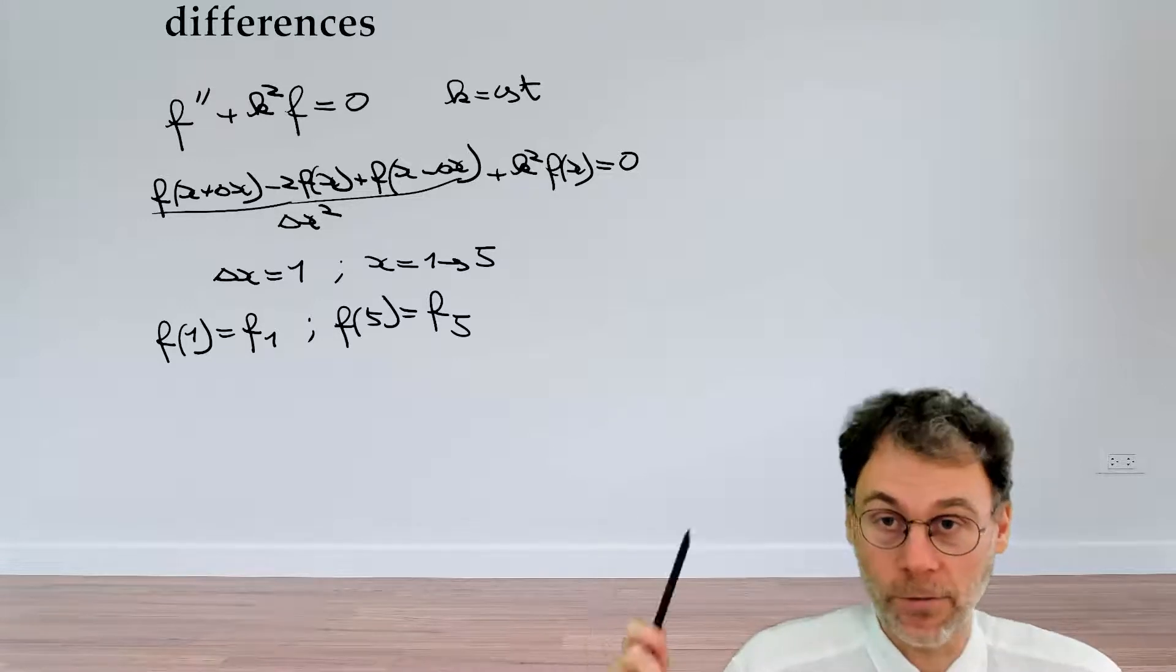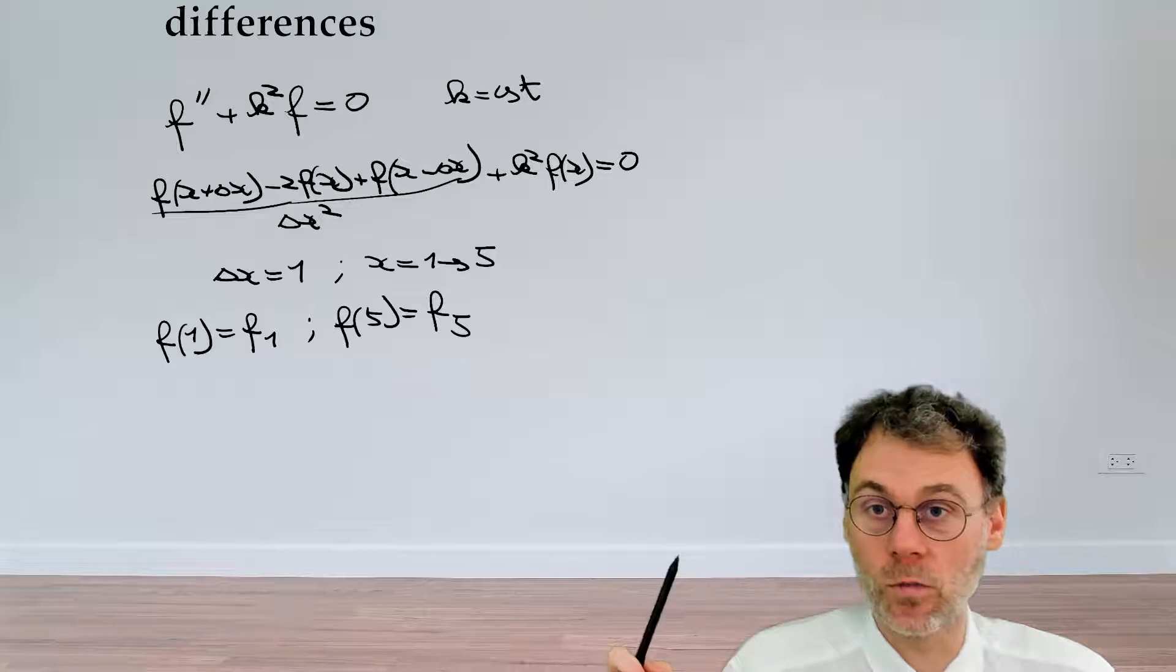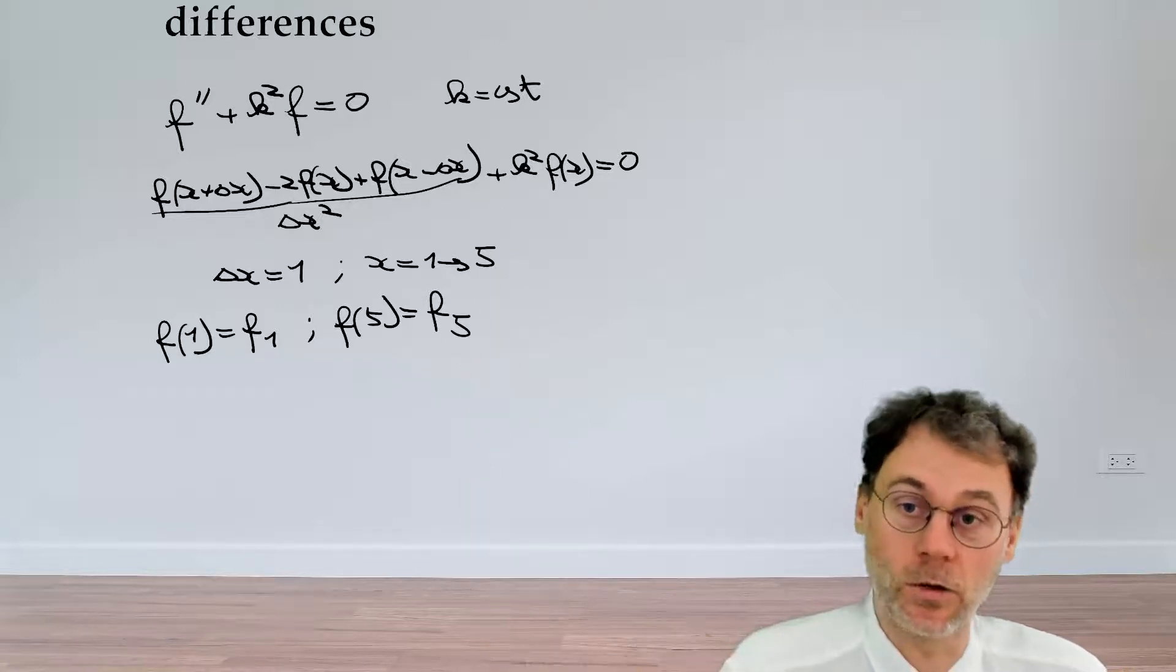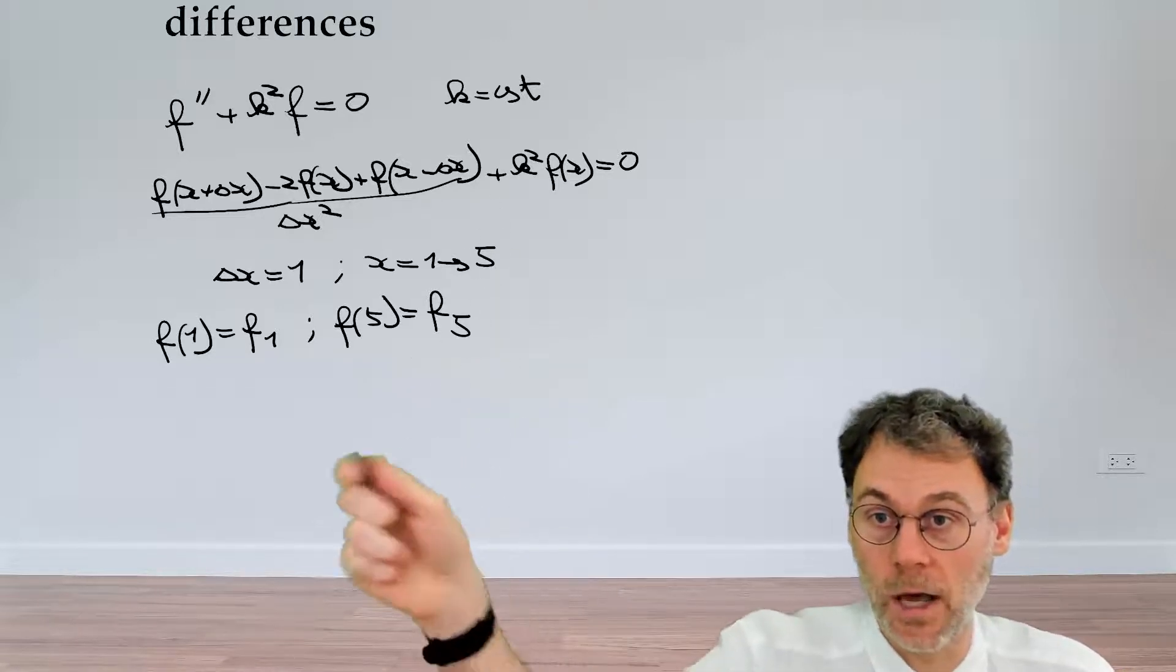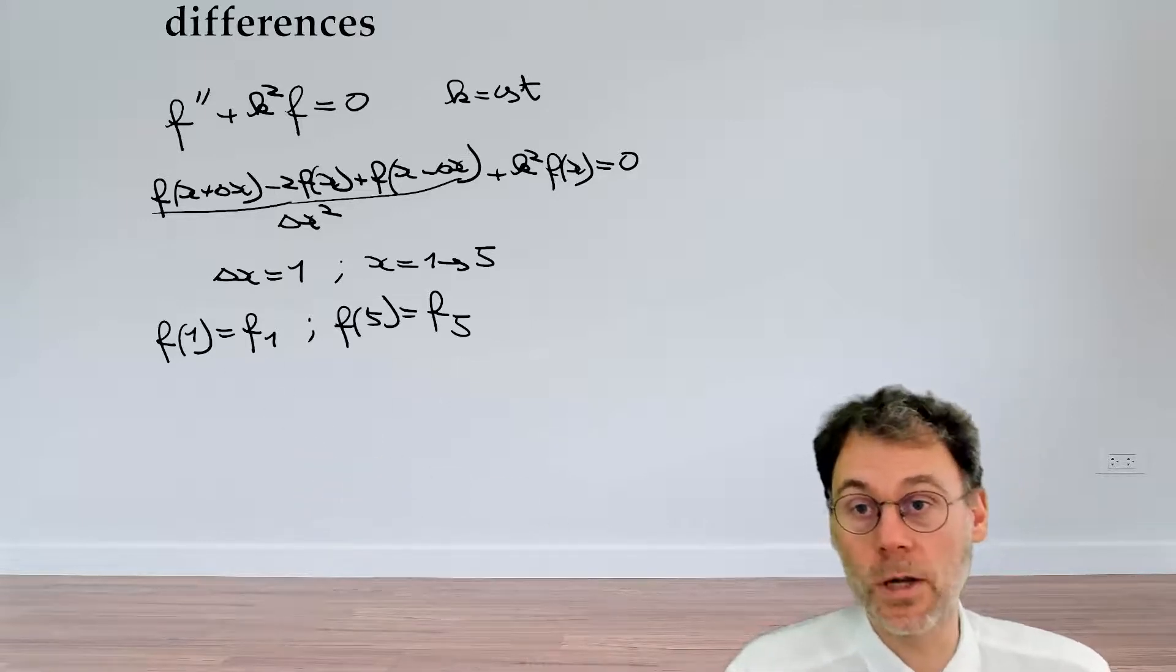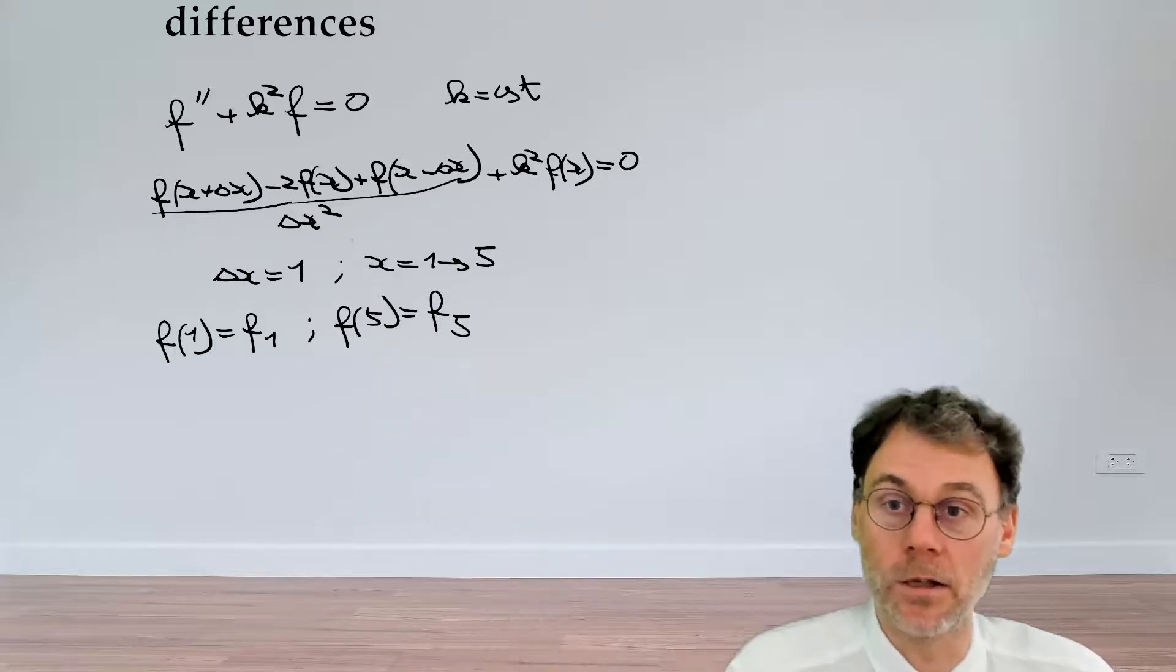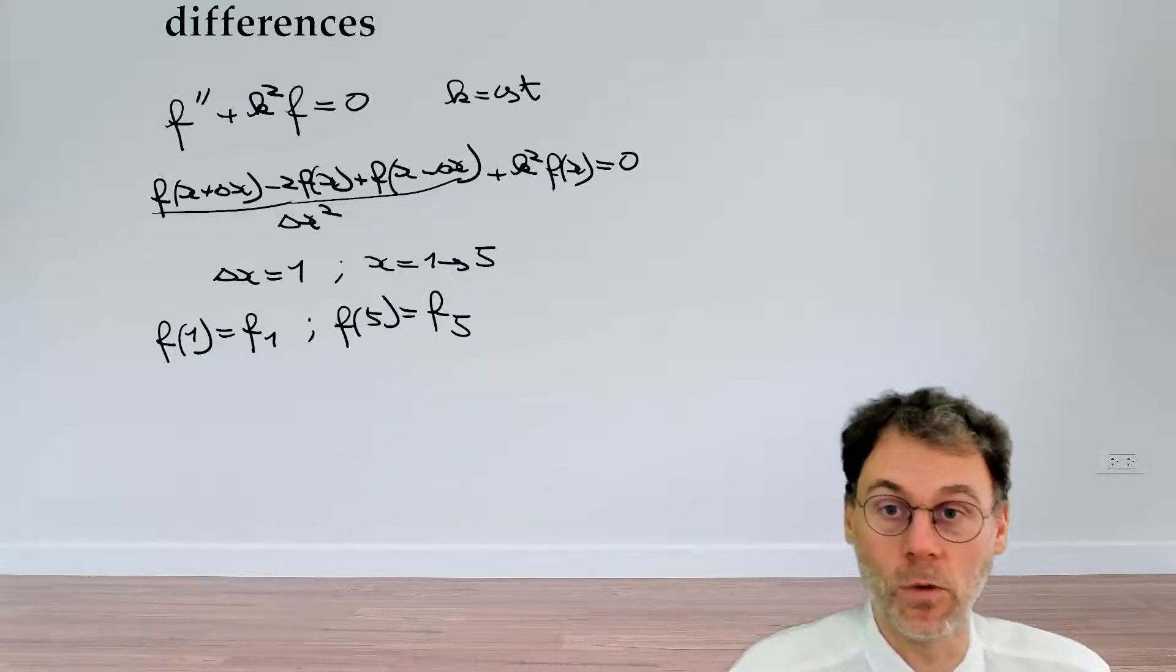So next step, pause the video and write down five equations to figure out what the field is in each of these grid points. Actually, you already have two of these five equations over here. So write down three more equations for the internal domain looking at this differential equation and then see what happens.